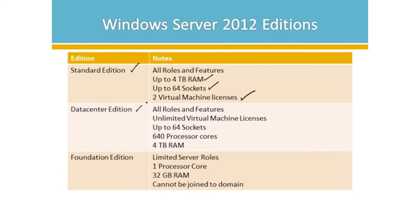Datacenter edition is for enormous corporations where you need all roles and features with unlimited virtual machine licenses. Even smaller organizations may benefit — I have a local police department with about 350 users where we virtualized everything, and it was cheaper to buy the Datacenter license than Standard edition licenses for everything we needed. So now we have an unlimited license to populate virtual machines. You get up to 64 sockets, more processor cores, and up to 4 terabytes of RAM.